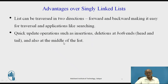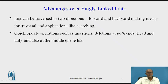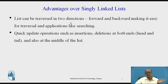Now let us see the advantages of a doubly linked list over a singly linked list. The list can be traversed in two directions — forward as well as backward — making traversal and applications like searching easier. It allows update operations such as insertion and deletion at both ends (head and tail) and also at the middle of the list. In a singly linked list, we can only go in one direction and cannot traverse in reverse.